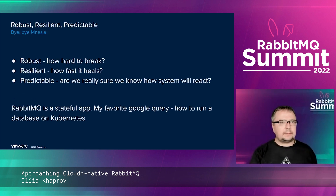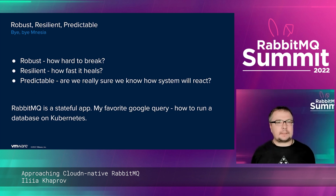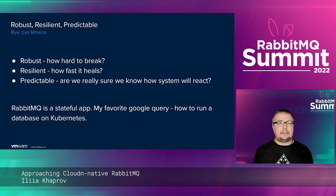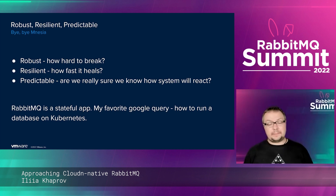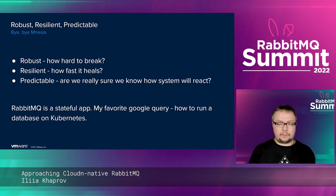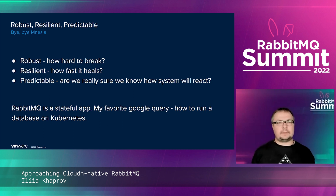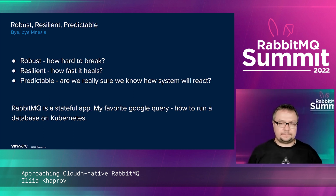Regarding resilience and predictability, the definitions are really consistent: robust means how hard to break, resilient means how fast it heals. Predictability is about whether we are sure how the system will react. The catch here is that RabbitMQ is a stateful app. Whenever we hear cool stories about dynamic environments, nodes going up and down, automatic clustering — all this Kubernetes stuff — it's tricky to apply to a stateful app.